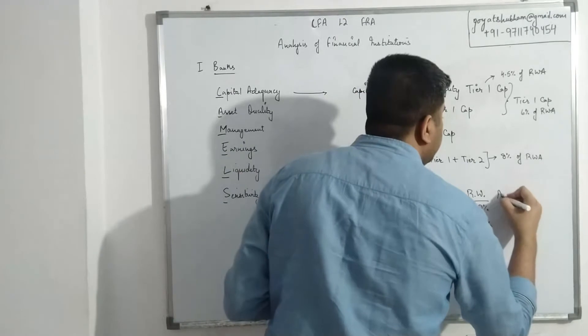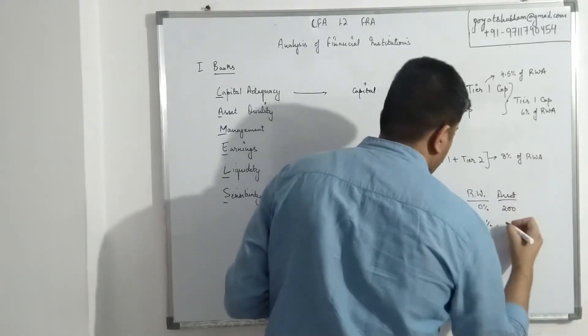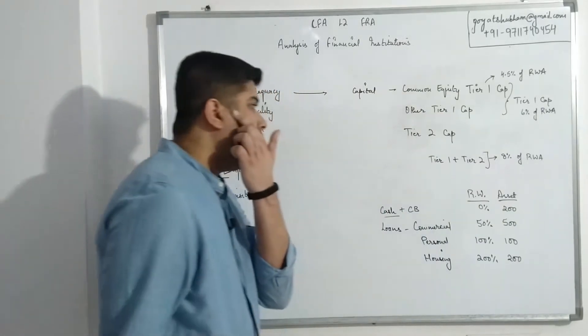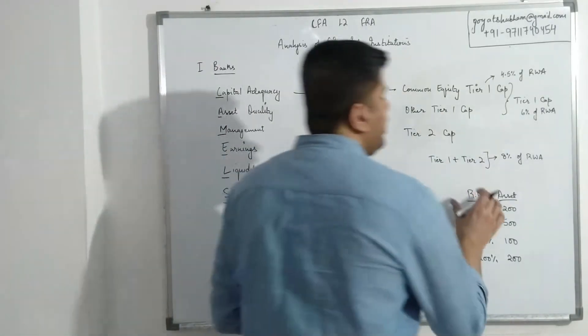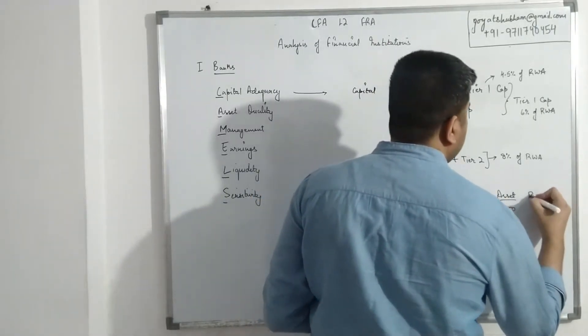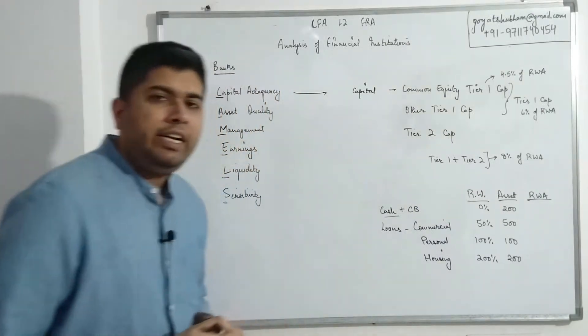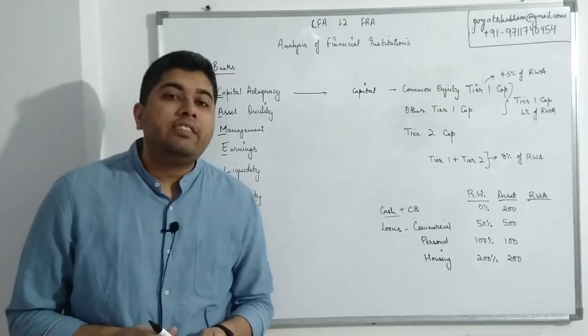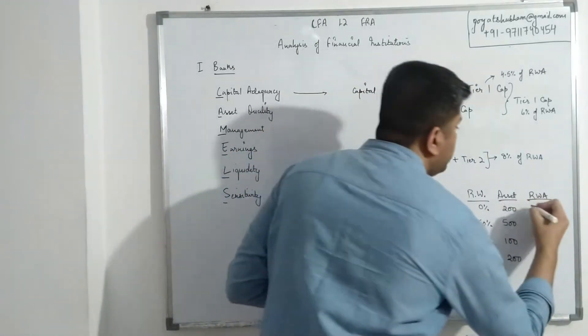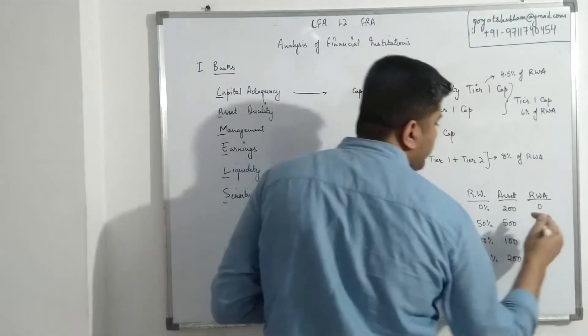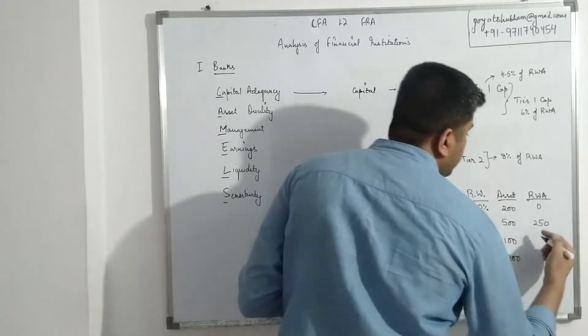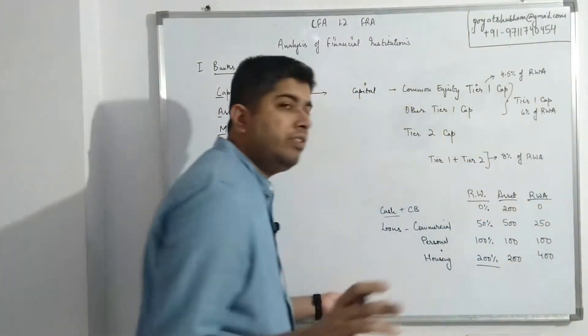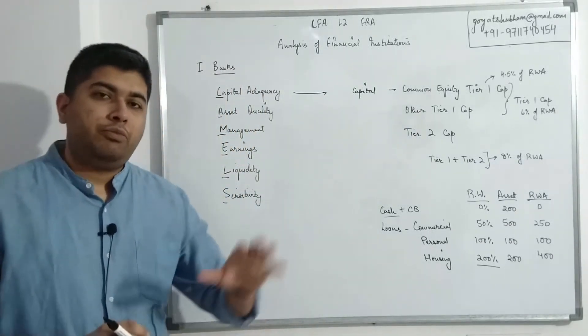Normally, risk weights for cash are zero percent because the bank thinks that if they already have cash, there is no chance of losing that cash. The cash is sitting with the bank itself. So cash and deposits with central bank are considered to be risk-free in their entirety, so we take this as zero percent. The central bank can specify other limits also. So let's say they are saying 50% risk weightage for commercial loans, 100% for personal loans, and let's say 200% for housing loans.